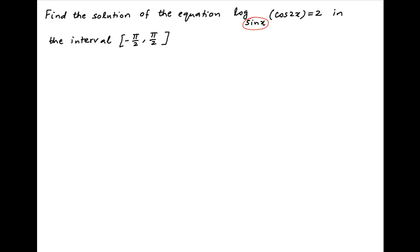The first thing to note is that the equation log of cos 2x to the base sin x equals 2 has a real solution only when the base of the logarithm is strictly greater than 0. Therefore sin x should be strictly greater than 0.